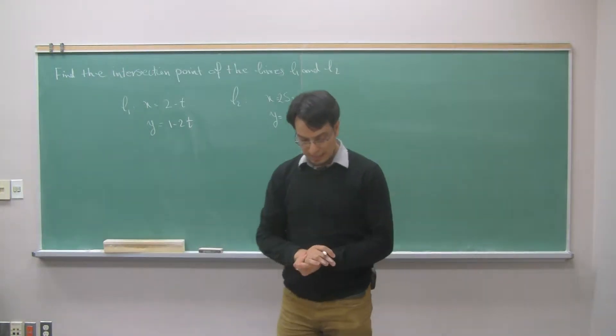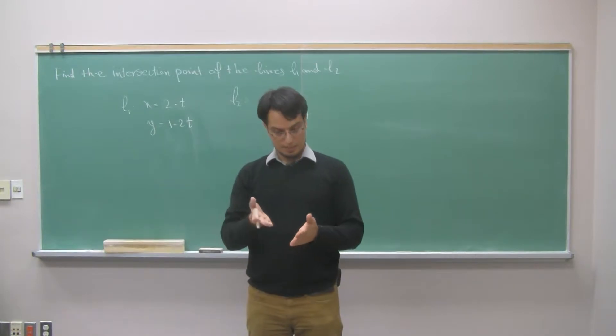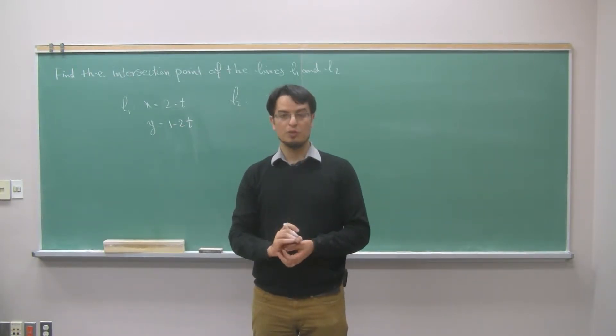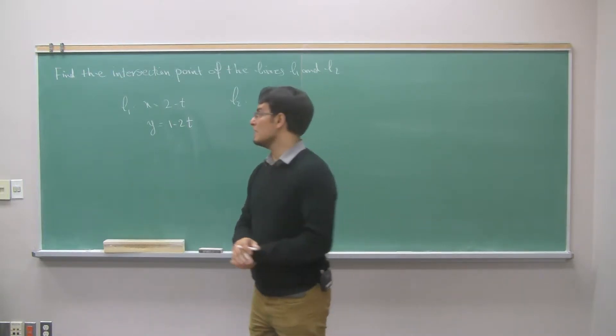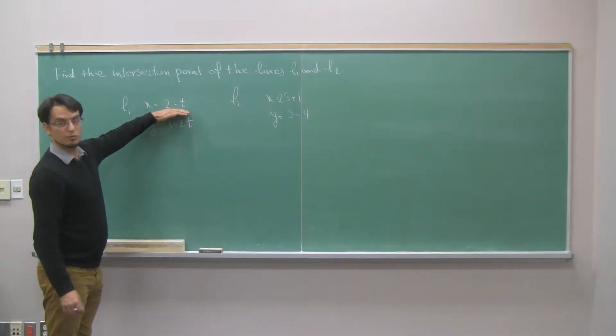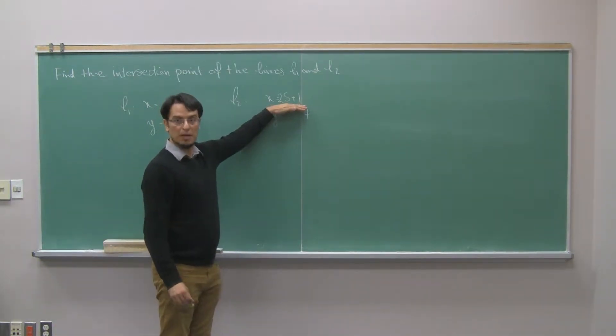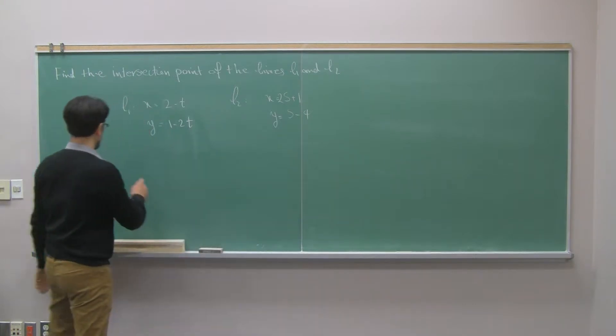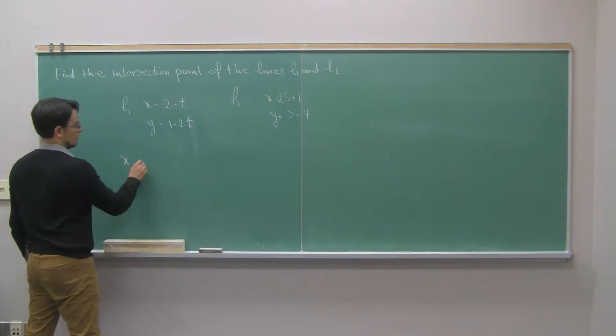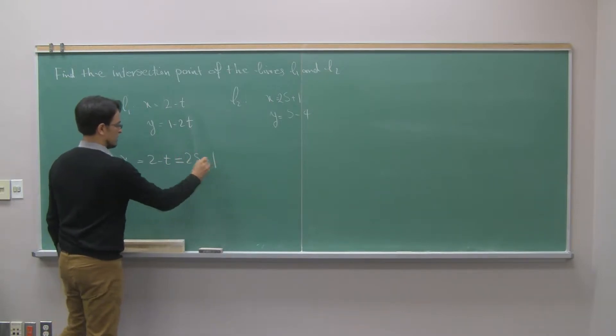To solve questions like this, you have to know that if two lines intersect, the intersection point will have the same corresponding components, meaning that at the intersection point, x which is 2 minus t will be equal to this x which is 2s plus 1.